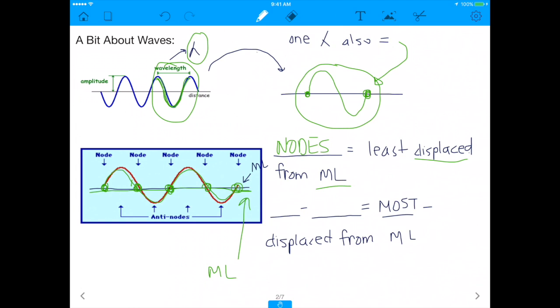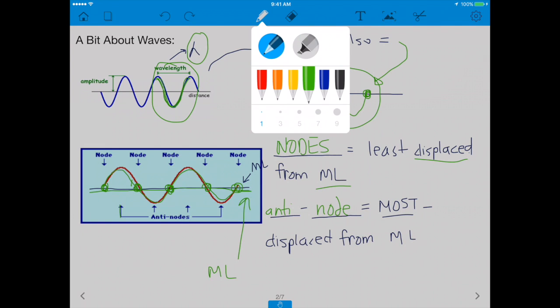On the other hand, anti-nodes are the most displaced from the middle line. So, let me show you where the anti-nodes are. This is an anti-node, right? You see this? Actually, let me do it in orange, so you guys can see.